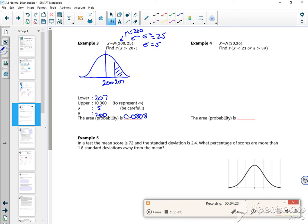So for this one, Example 4, if I was to draw it, there's 30 in the middle so mu is 30. Sigma squared is 36 so sigma is 6. I'm looking at less than 21 or greater than 39. So that's going to be the same as 1 minus the probability between 21 and 39.